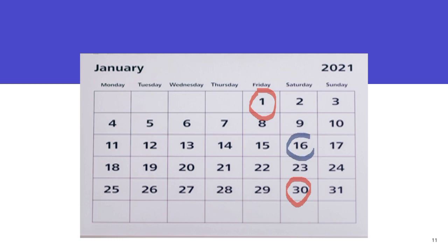That means the most probable day that you are most fertile is day 16 of your cycle, counting from the first day of your menstrual flow. Now you count 3 days before that day and 3 days after.